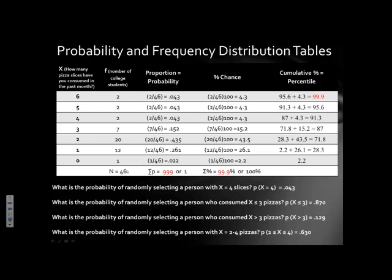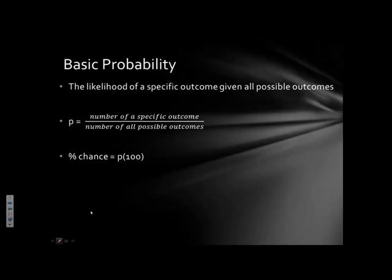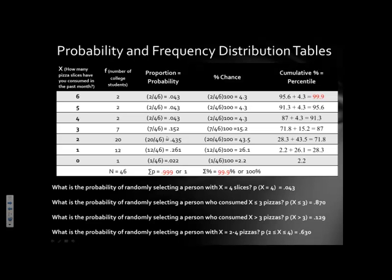For two pizza slices: 20 students out of 46, so 20 divided by 46 = 0.435. Remember, probability and proportion are expressed in decimal form. One way to check your work is to add up all probabilities for all values in your data set — you should get a value within rounding error of 1, since 1 represents all possible outcomes.